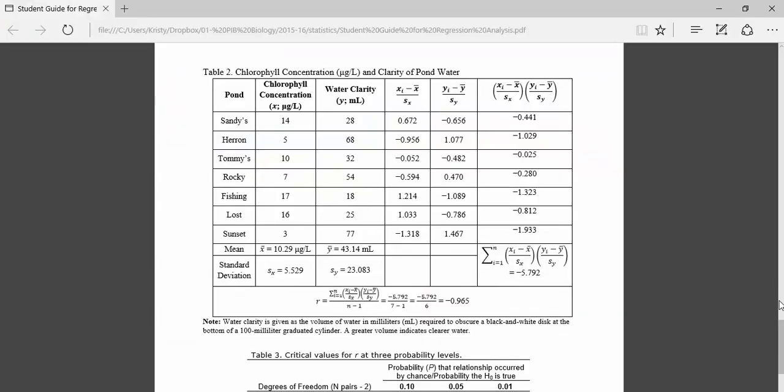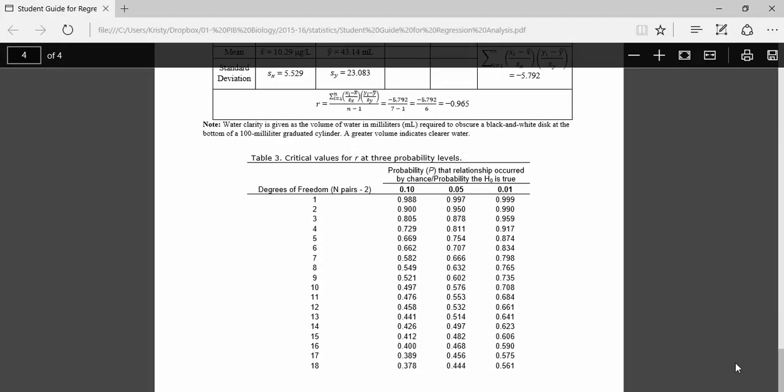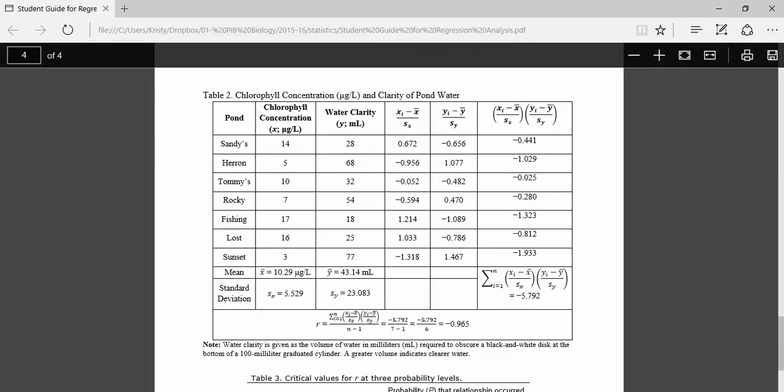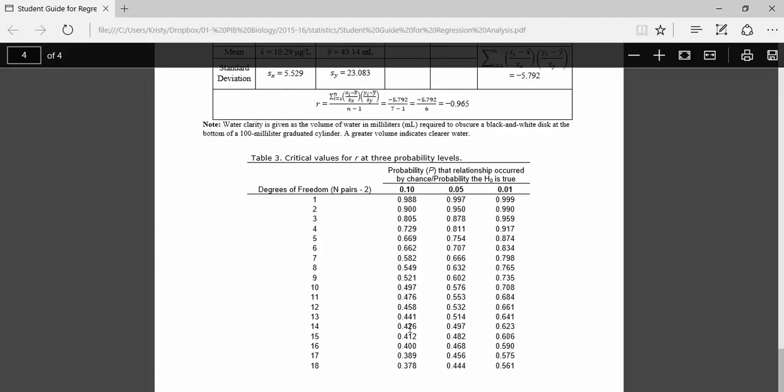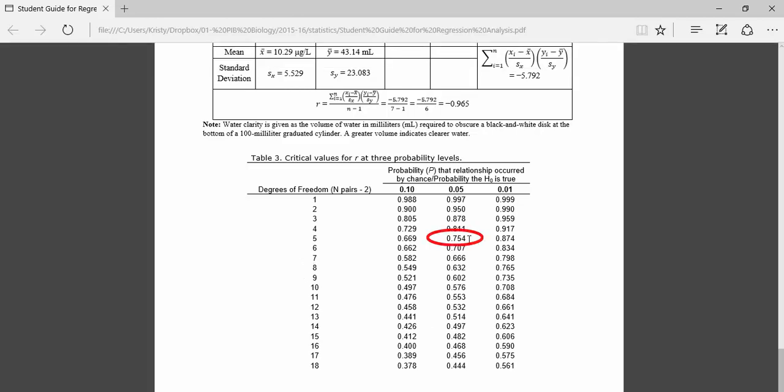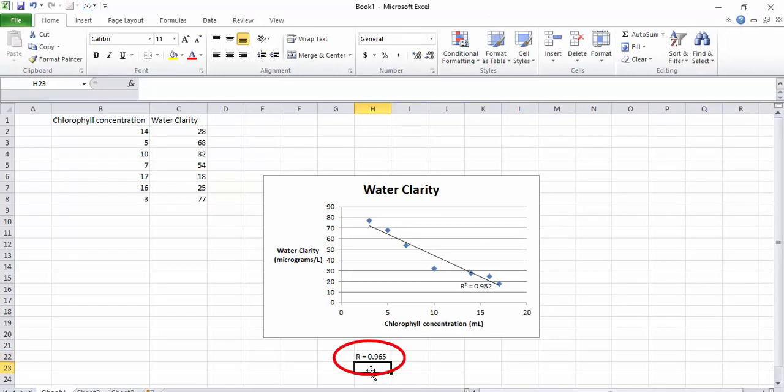If we go back to our table of critical values and I look at the 0.05 probability level here, we started with a sample size of 7 in this case. So my degrees of freedom are going to be 7 minus 2 or 5. When I come over here, my critical value is 0.754. And 0.754, as it turns out, is much less than the R value of 0.965. So in this case, the students can reject the null hypothesis, and they can say that chlorophyll concentration and water clarity are significantly associated. Now the other way you can look at this is that chlorophyll concentration predicts water clarity with an accuracy of 0.932, which is also a very significant correlation.